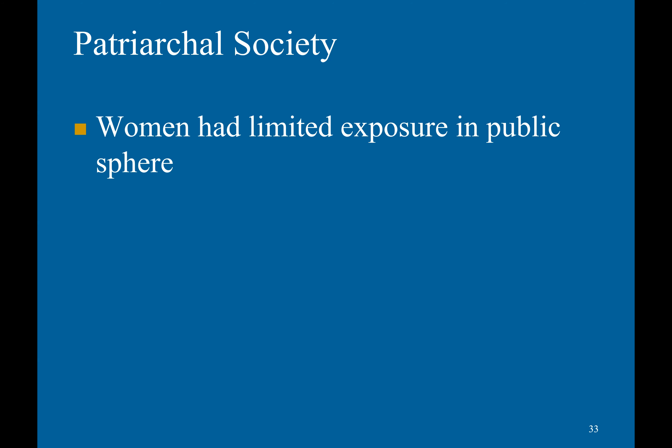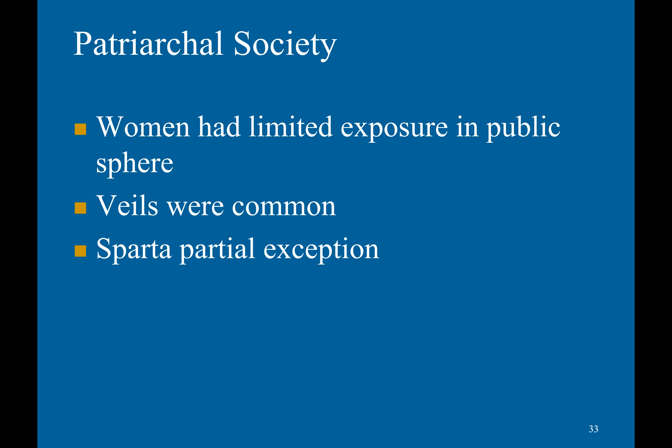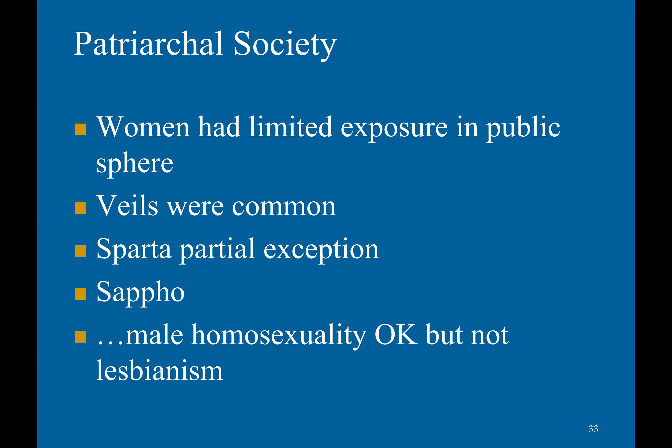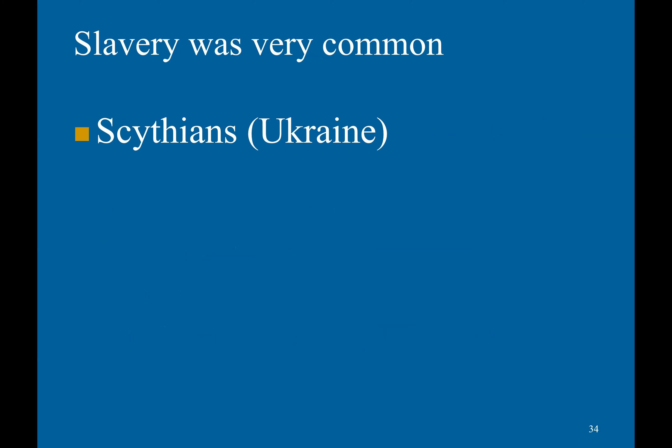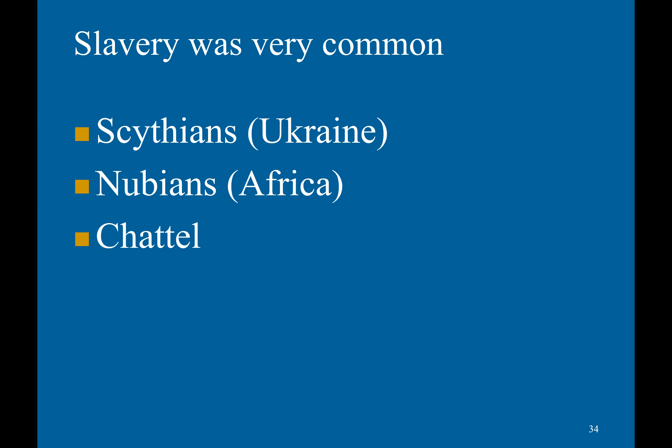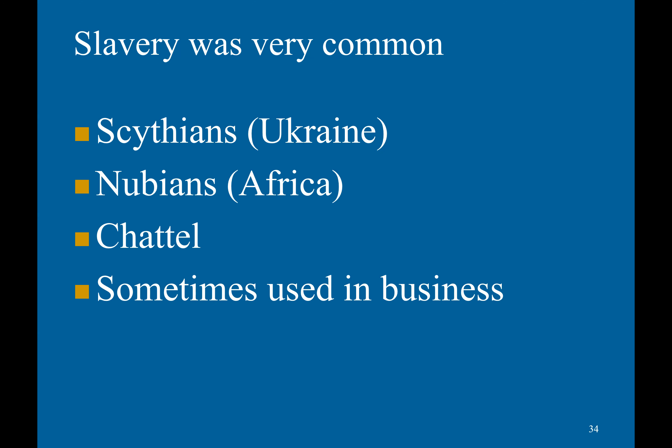Patriarchy was present in almost every Greek society — women had limited exposure in the public sphere and veils were common, though Sparta was a partial exception. Male homosexuality was accepted, but not lesbianism. Slavery was very common; in some places, slaves comprised a third of the population. These included Scythians from Ukraine and Nubians from Africa, forced into chattel slavery, with some also used in business. Interestingly, the word 'slavery' comes from the word 'Slav,' because many early slaves were Slavic people. Slaves did have the opportunity to buy their freedom.